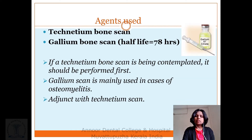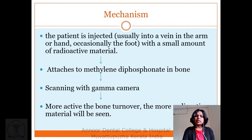Agents used: technetium bone scan and gallium bone scan. If a technetium bone scan is being contemplated, it should be performed first. Gallium scan is mainly used in cases of osteomyelitis, and it is an adjunct with the technetium scan. The mechanism involves the patient being injected with a small amount of radioactive material attached to methylene diphosphonate, which targets bone. Scanning with the gamma camera then occurs. The more active the bone turnover, the more material will be seen at the site.